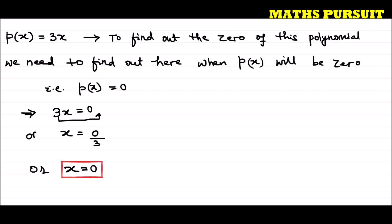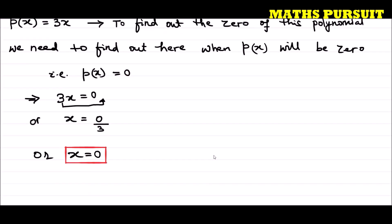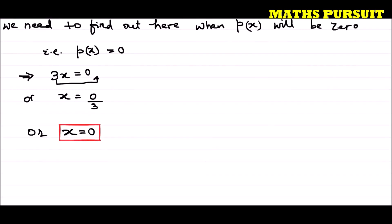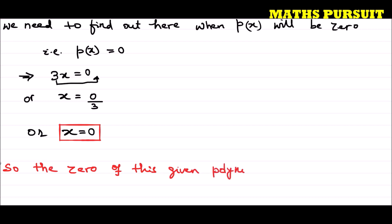We can write our concluding answer: the zero of this given polynomial is 0. Hope you understood — this is very simple and very straightforward.